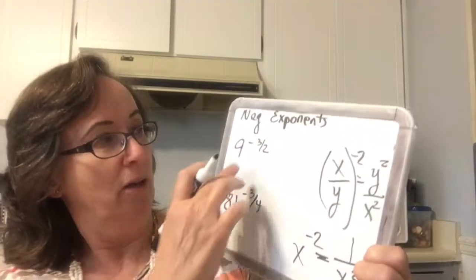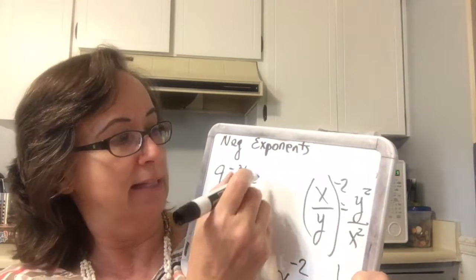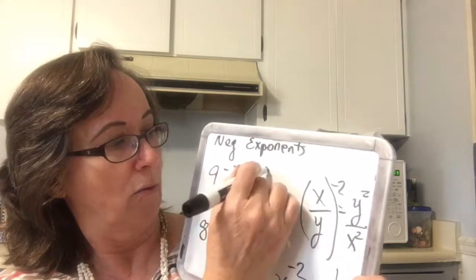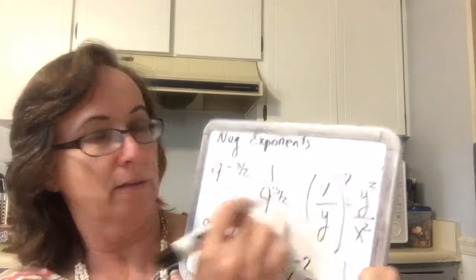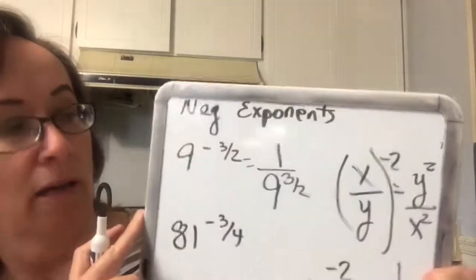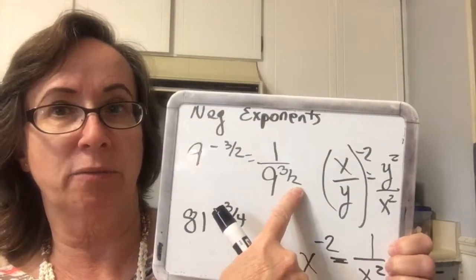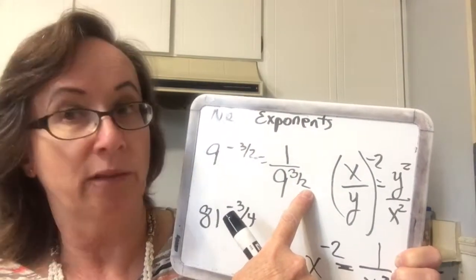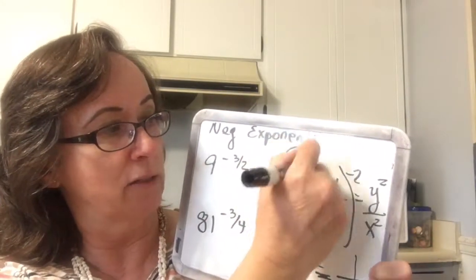Now we look at 9 to the negative 3/2. That's the same thing as 1 over 9 to the 3/2. The square root of 9 is 3, and 3 cubed is 27. So the answer to this one is 1 over 27.